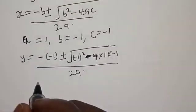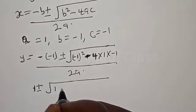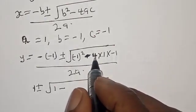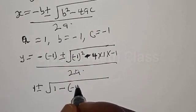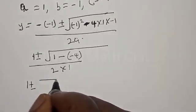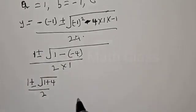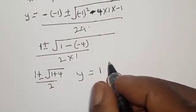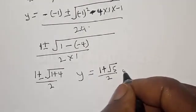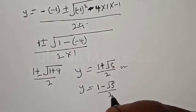Then we have 1 plus or minus square root of 1 minus minus 4, over 2 times 1. Then we have 1 plus or minus square root of — since minus times minus is plus — 1 plus 4, over 2. Therefore y is equal to 1 plus or minus square root of 5 over 2.